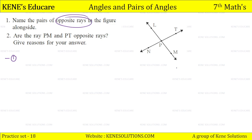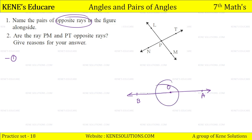Opposite rays means: for example, here we have a point named O. Here we have a ray OA, and alongside we have ray OB. If OA and OB form a straight line and their origin is the same, then we call them opposite rays.